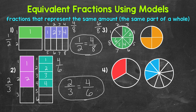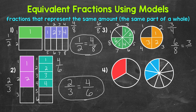The circle on the right has been divided into four equal parts, so four is our denominator. And three of those parts have been shaded in, so that circle is representing three fourths. So six eighths and three fourths are equivalent.